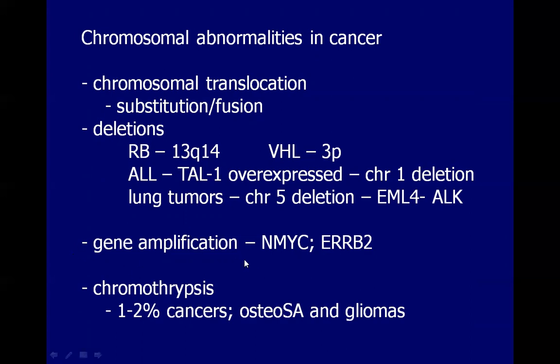Gene amplification is associated with oncogene activation. Examples include NMYC in neuroblastoma and ERBB2 seen in breast cancer. In NMYC, this can be in the form of extra-chromosomal double-minutes formation or the formation of the HSR, which is the homogenous staining region. This is associated with 25 to 30% of cases of neuroblastoma.